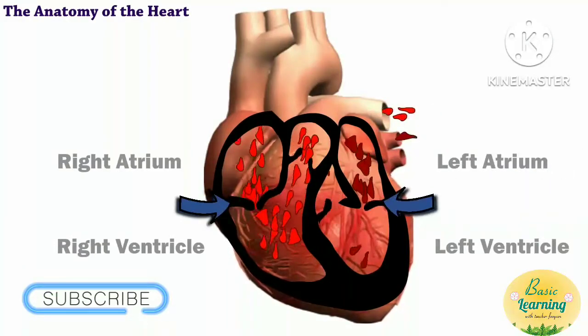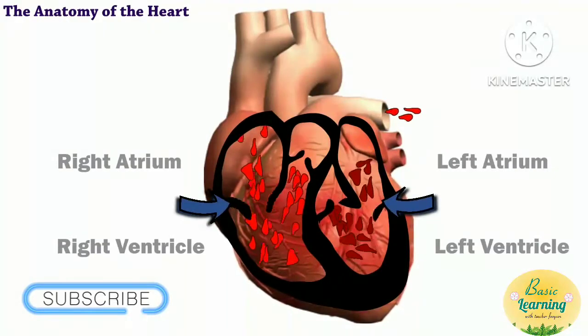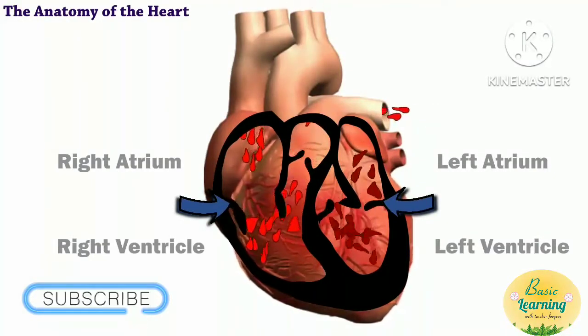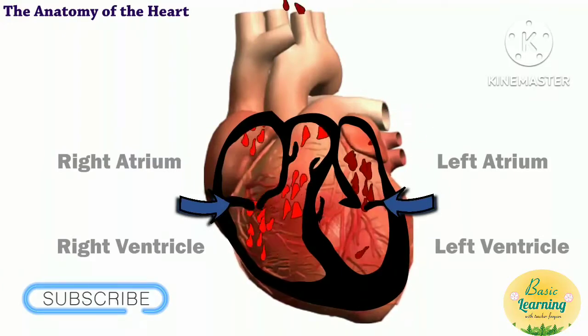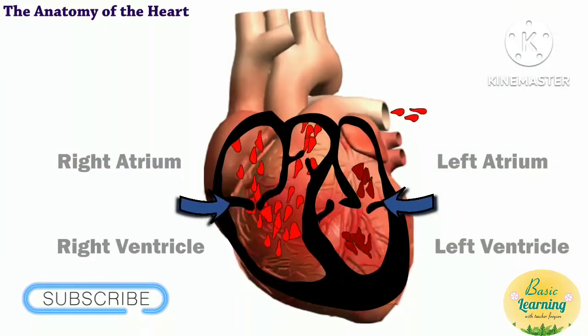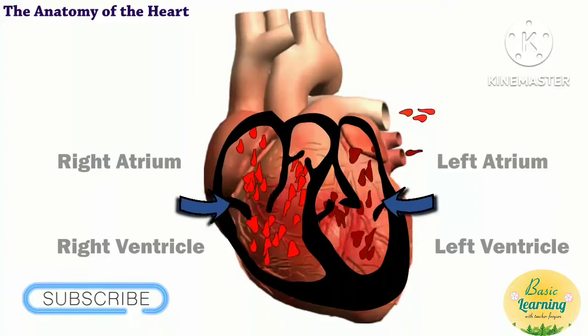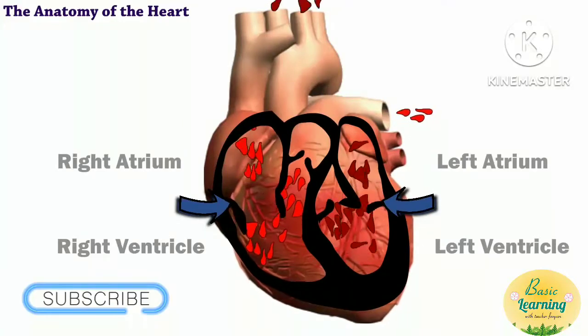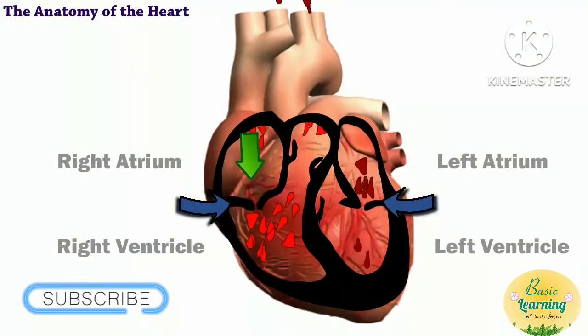Before your heart pumps it to the rest of the body, each chamber is separated by the cardiac muscle and valves. The valves effectively move blood throughout the heart by opening in only one direction.